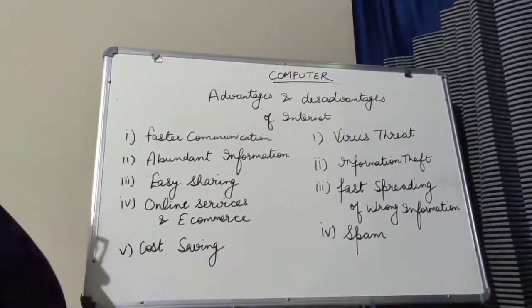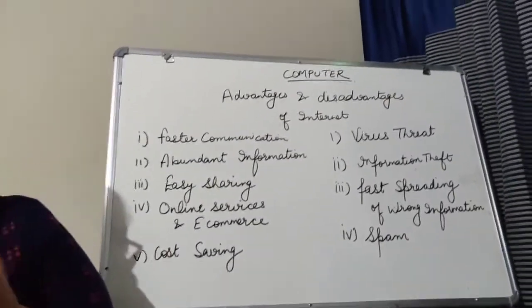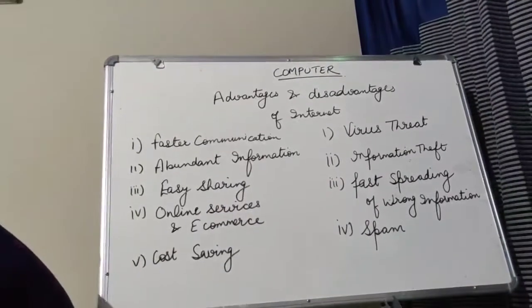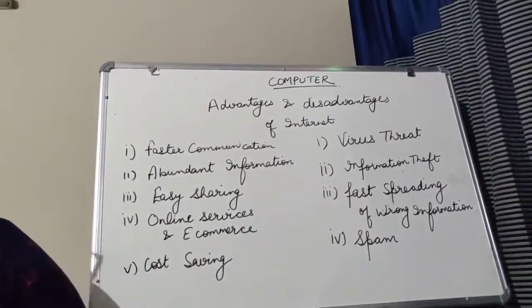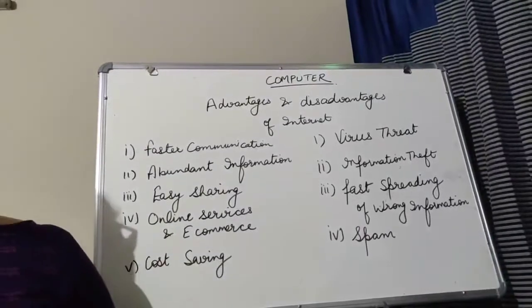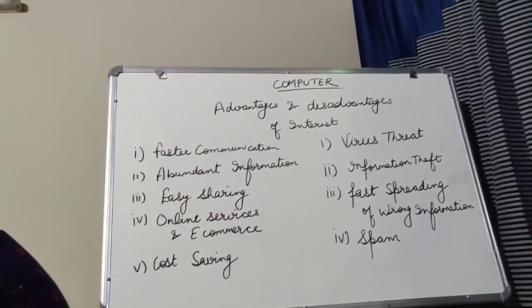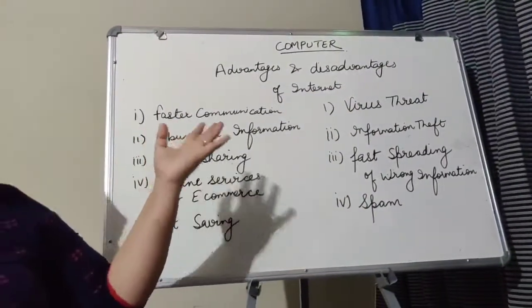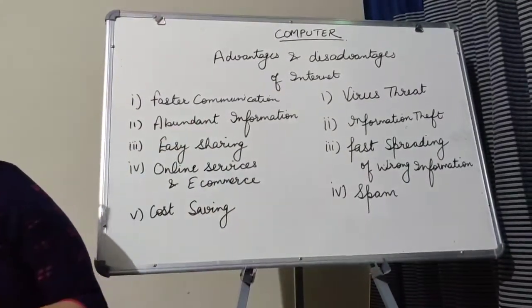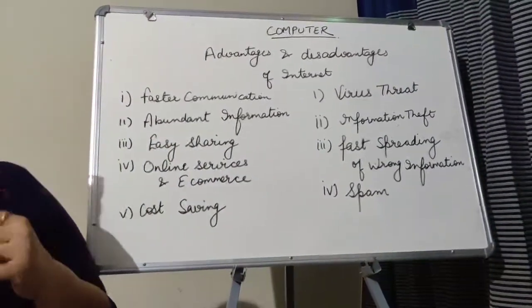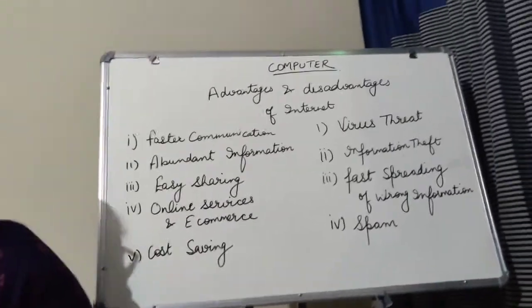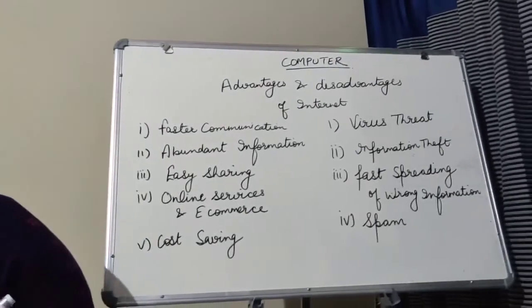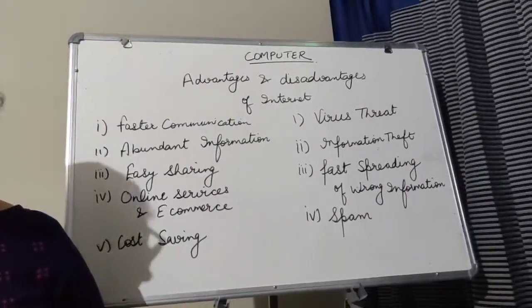So students, today we have studied about network, internet, uses of internet, and advantages and disadvantages of internet. So this is all about your today's class. In next class we will move further with something interesting, something new about internet. Till the time read that points, go through that points. And again be healthy, stay healthy, safe, healthy with your parents, eat healthy, and obey your parents. Again I am telling you, you don't have to justify your parents. Thank you, bye-bye.